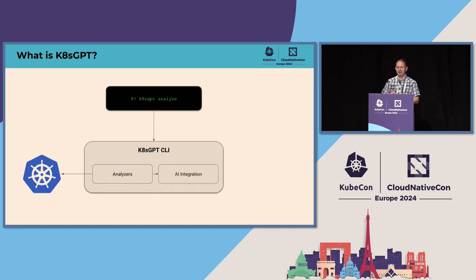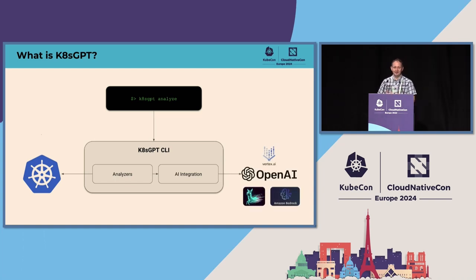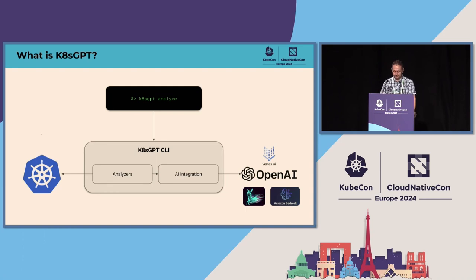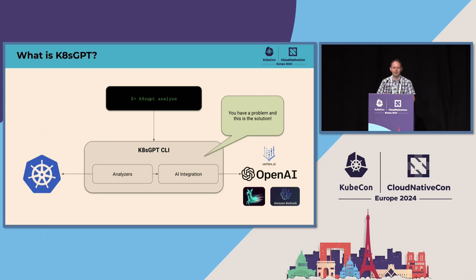Furthermore, we have AI integrations. In the meantime, we have many AI integrations such as for OpenAI, Vertex, Bedrock, and also for local AI. With the analyzers, we try to find as much data as possible in our Kubernetes cluster, and with the AI integration, we try to interpret it. In the end, K8sGPT tells you that you have a problem and what the solution is. Without the AI integration, it only tells you that you have a problem.